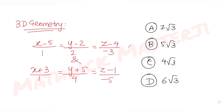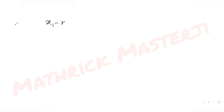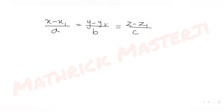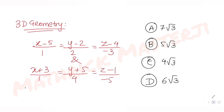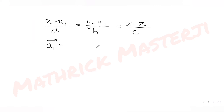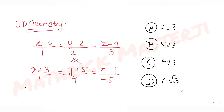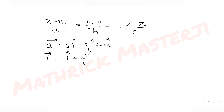I know that whenever line equations are given, I can compare them with the general form: (x − x₁)/a = (y − y₁)/b = (z − z₁)/c. From this you get position vector (x₁, y₁, z₁). From line 1, vector a1 is (5, 2, 4), so it becomes 5i + 2j + 4k. And direction vector r1, from the denominators, is i + 2j − 3k.